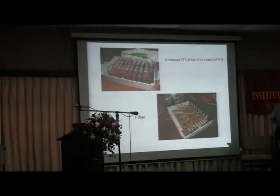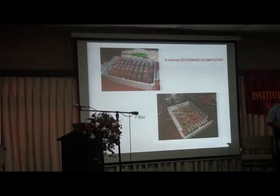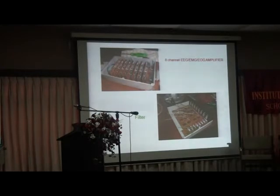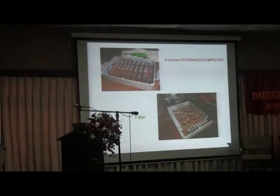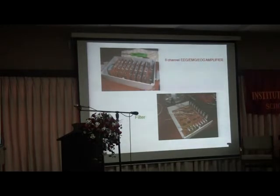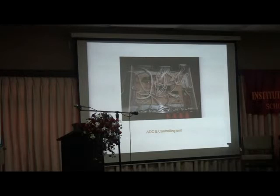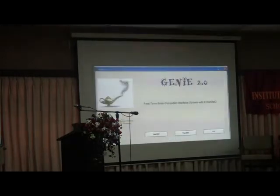This is a photograph of the amplifier we built in our group — it has eight channels. The upper box is the amplifier, then below is the filter which removes unnecessary signals. We also have an interface that connects the amplifier and filter to the computer. This contains microcontrollers. The filter diagram shows what is inside the box, and we also have a diagram of the interface circuit — this is what we built.